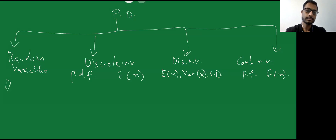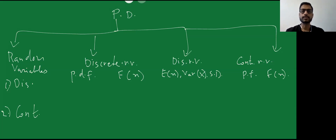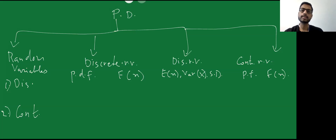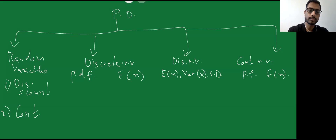Random variables are of two types: discrete and continuous. Discrete random variables are those which are countable. For example, the number of floors in a building can be 1, 2, 3, 4. Number of mistakes in one page: one mistake, second mistake, third mistake. Or a person giving multiple exam attempts: first attempt, second attempt, third attempt. So discrete random variables are when you can count the values.